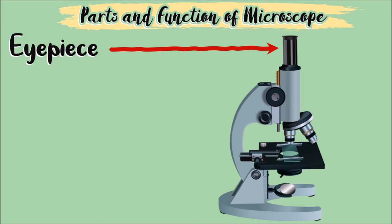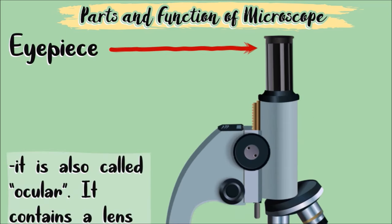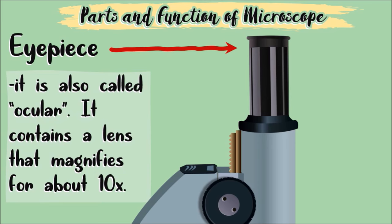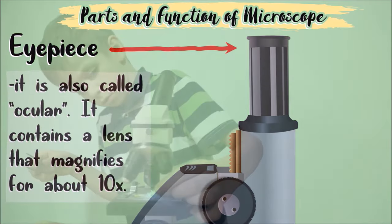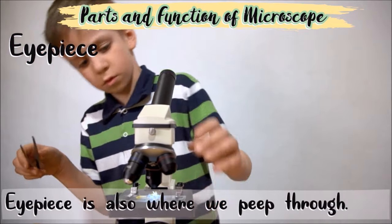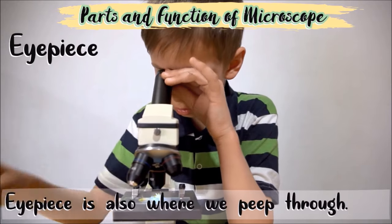This is the eyepiece. It is also called ocular. It contains a lens that magnifies for about 10 times. It is also where we peep through.